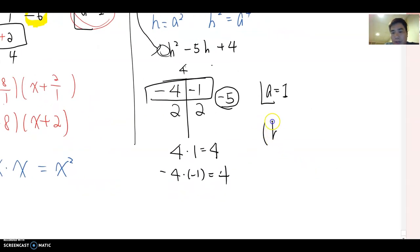Now we complete factoring so far. So it becomes h minus 4 over 1, then h minus 1 over 1. Which means h minus 4 and h minus 1. But please don't stop here because h was a squared.